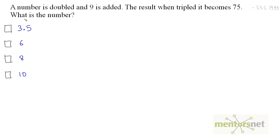Let's get to the next question. A number is doubled and 9 is added. The result, when tripled, becomes 75. What is this number?